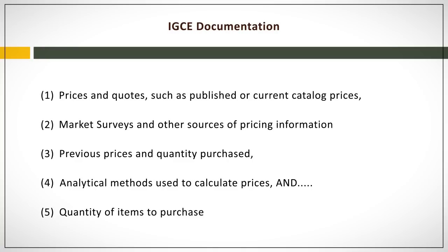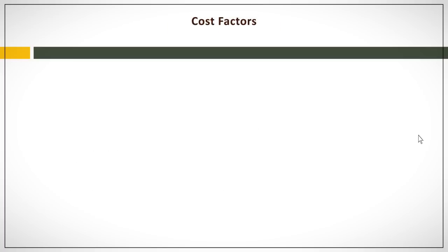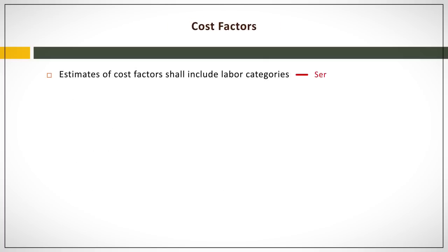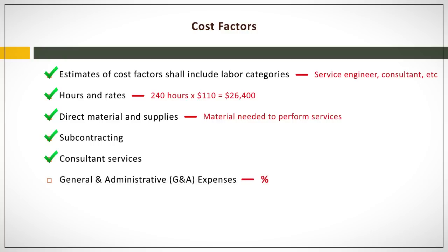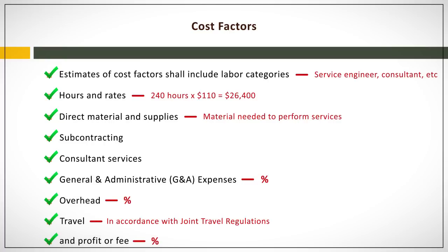IGCEs at cost level provide a breakdown of all costs anticipated in the performance of the contract. This should include a breakdown of all cost factors required, including an estimate of labor categories, hours and rates, direct material and supplies, subcontracting, consultant services, general and administrative (G&A) expenses, overhead, travel, and profit or fee. Support for this information may come from an engineering or requiring activity's bottoms-up estimate, historical cost records for previous and/or similar contracts, and market research on the particular industry.